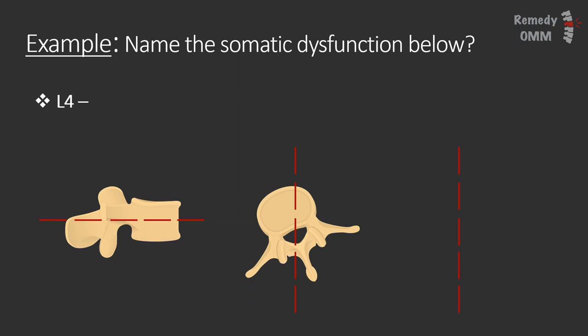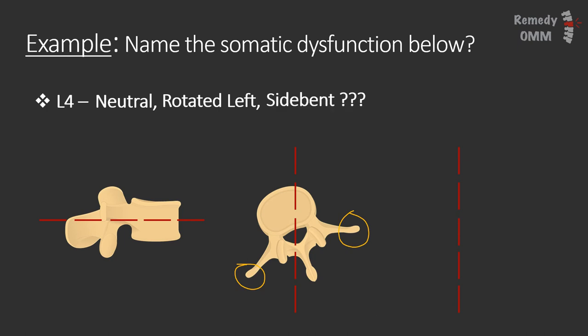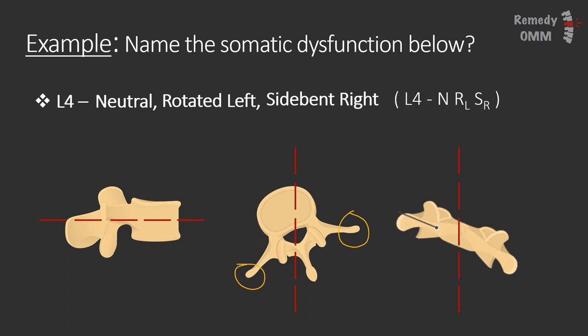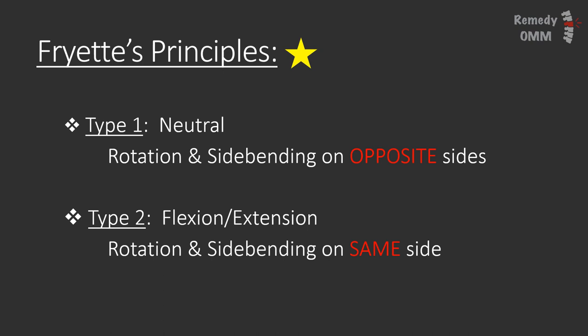Example two: again name the somatic dysfunction at L4. Looking at the first image, the vertebra is not dipped forward nor pulled back, so we are in a neutral position. The rotation component: same as last time, turned to the left, left transverse process more posterior than the right — rotated left. For side bending, since we are neutral we follow type 1 Freyett's principles — one of each. Rotated left means side bent right. Shorthand: L4 N RL SR. Type 1, one of each; type 2, two of the same.